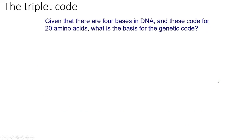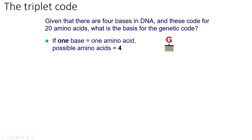The triplet code is based on the four bases of DNA, with some changes when we look at mRNA. There are four bases, and they must code for 20 amino acids. If we only used one base to code for amino acids, we'd have bases A, C, G, and T — giving only four different combinations, so only four possible amino acids. So we know it's not that.